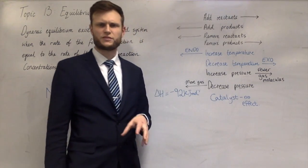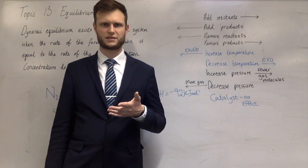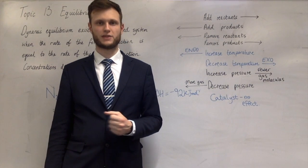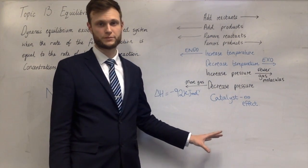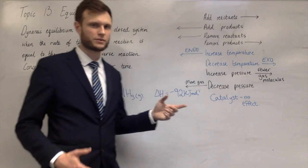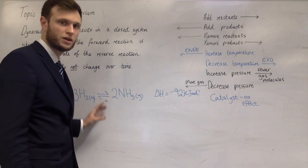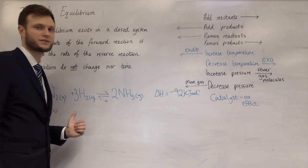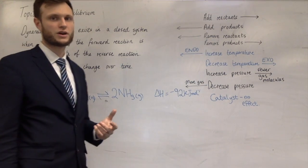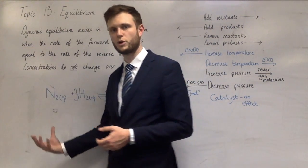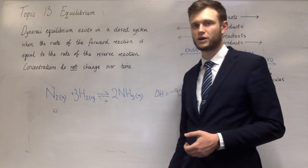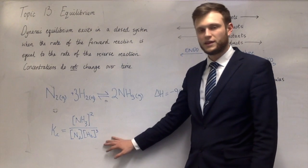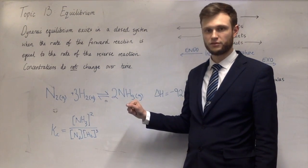There's one thing that comes up in this specification and that's Kc. Kc is called the equilibrium constant expression. You need to know how to write an expression for it, but you don't really need to know much else about it — except that if the number is bigger than one you've got more products than reactants, and if the number is less than one you have more reactants than products. I'll teach you how to write an equilibrium constant expression for ammonia. This will be the equilibrium constant expression for this reaction.